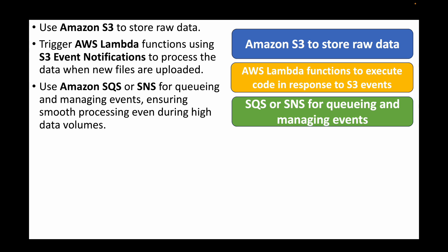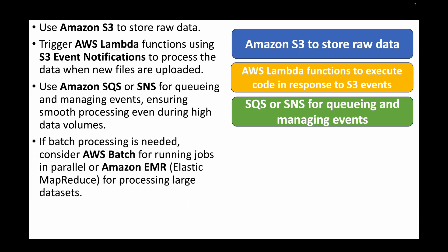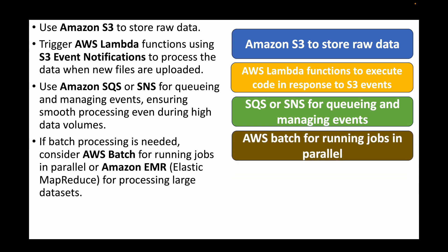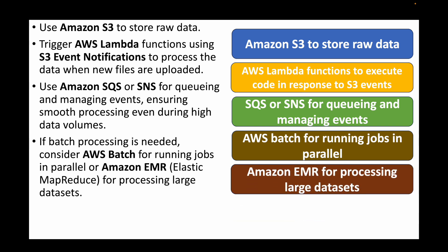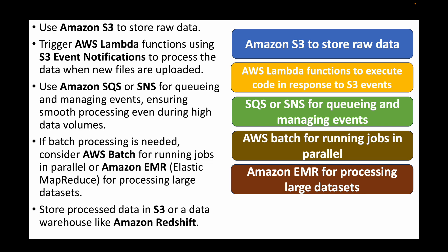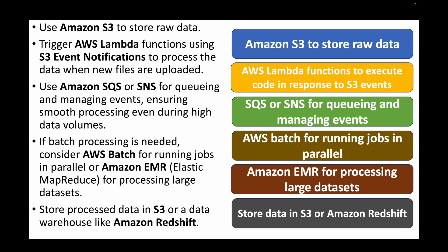We can also use SNS or SQS for queuing and managing events, ensuring no events are lost and enabling smooth processing even at high data volumes. For batch processing, we can use AWS Batch for running multiple jobs in parallel, or Amazon EMR (Elastic MapReduce) for processing large data sets. The processed data is then stored in S3 buckets or a data warehousing service like Amazon Redshift.